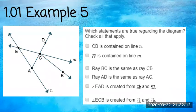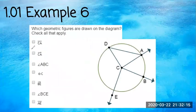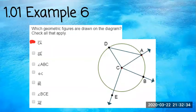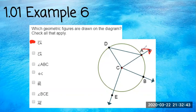Number six: which geometric figures are drawn on the diagram? I'm a visual person so I have to write these out. Segment CA — that is a line segment with points at C and A, so yes. Ray CA — it has a point at C and passes by A with an arrow, so that checks out. Angle ABC — there's no line there, so that one is a no.